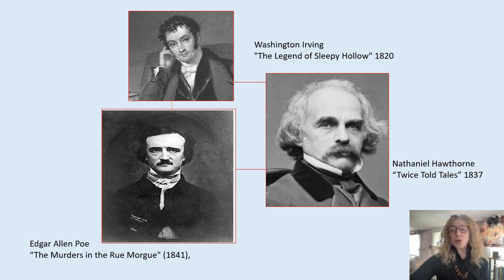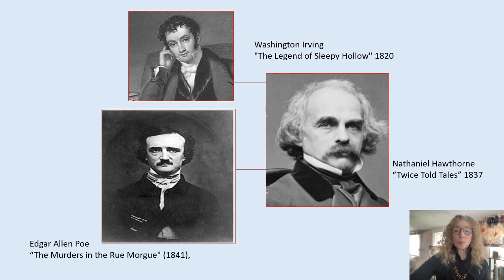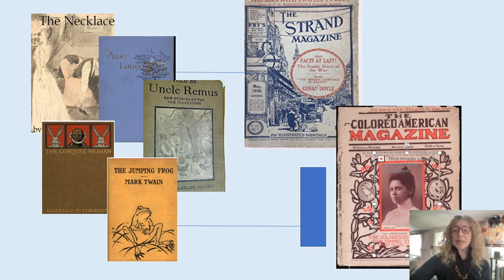Once we reviewed the formal elements of the short story — plot, setting, character, conflict, theme — we reviewed the history of the genre. We acknowledged its American ancestors: Washington Irving, Nathaniel Hawthorne, and of course Edgar Allan Poe. We discussed the growth of the short story and its development by the end of the 19th century as the result of the rise in magazines and the increase in both black and white publishing houses.